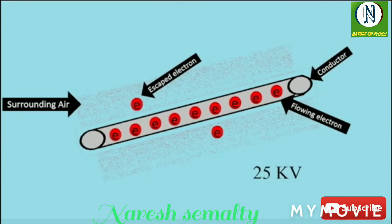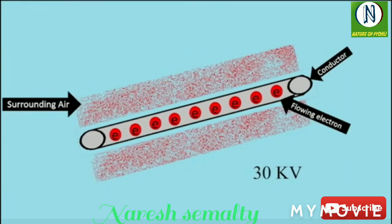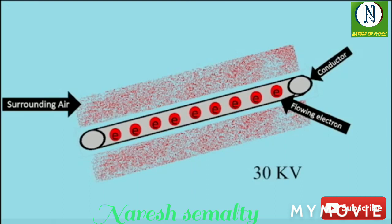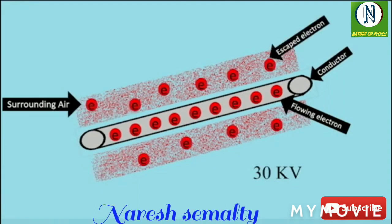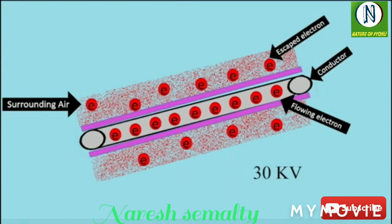When the potential difference increases beyond a threshold value of around 30 kV, known as the critical disruptive voltage, the field strength increases and the air surrounding the conductor experiences stress high enough to be converted into ions, making the atmosphere conducting. This results in electrical discharge around the conductor due to the flow of electrons, giving rise to a violet glow along with a hissing sound.